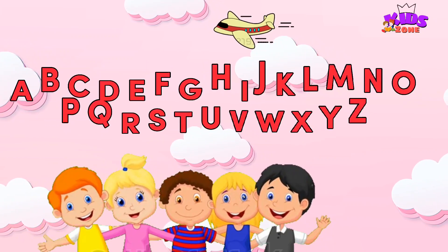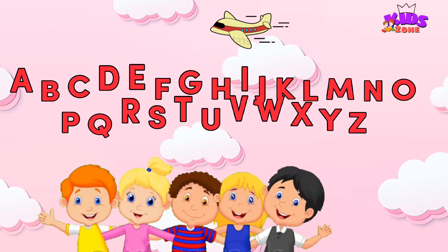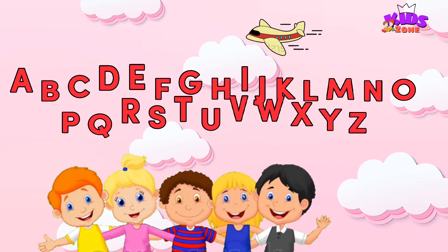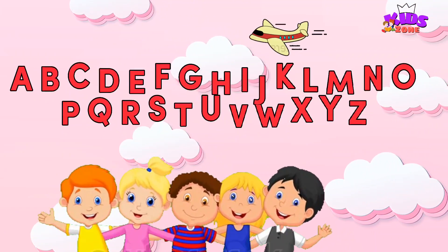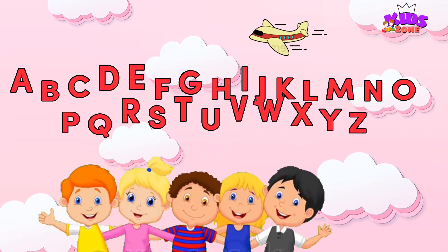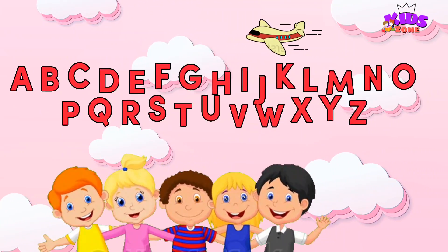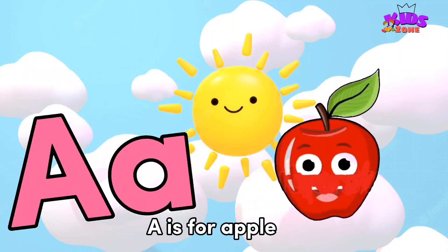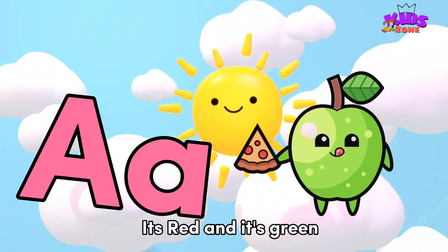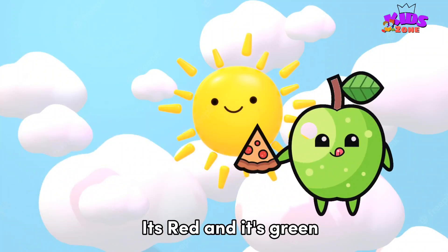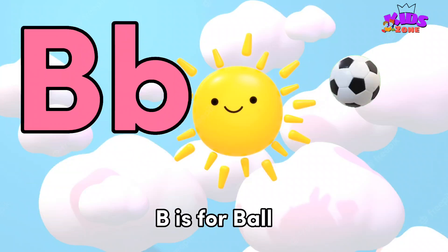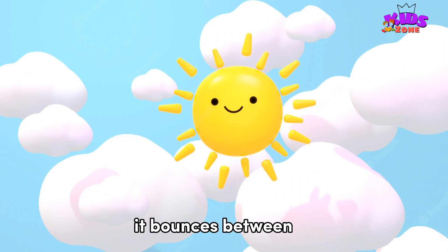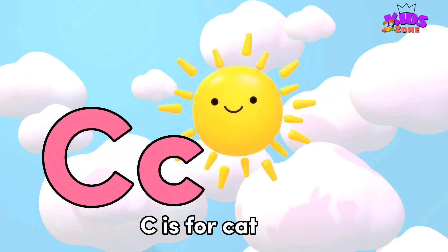A is for Apple, it's red and it's green. B is for Ball, it bounces between.